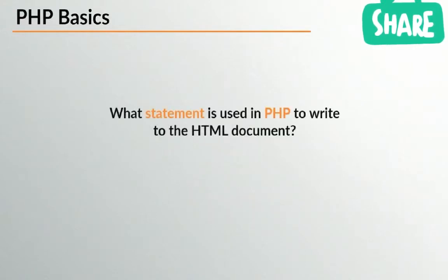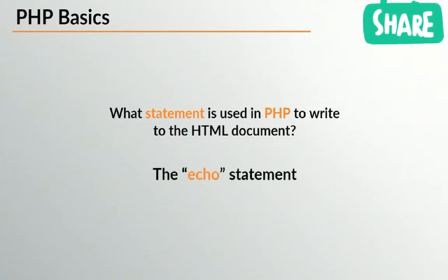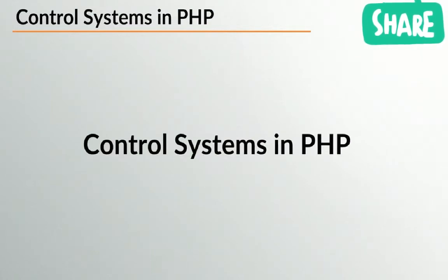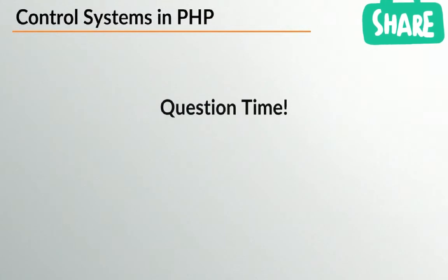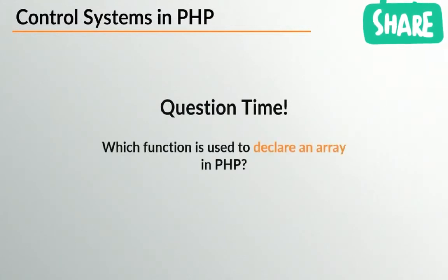What statement is used in PHP to write out to the HTML document? Lots of people coming in with the correct answer — echo, with a smiley face from Nicholas. The answer of course is the echo statement. Now, control systems in PHP: we've already looked at the if statement, the for loop, and arrays in JavaScript. We're now going to look at how similar and different they are in PHP — there are some notable but important differences. Before we get into it, a quick question: what function is used to declare an array in PHP? This is one of the big differences between PHP and JavaScript.